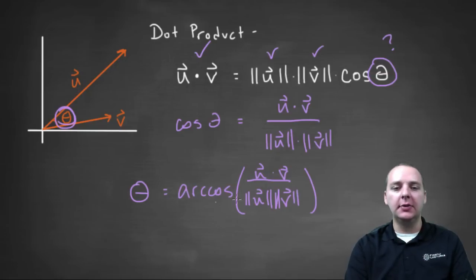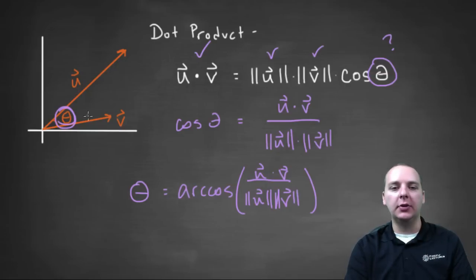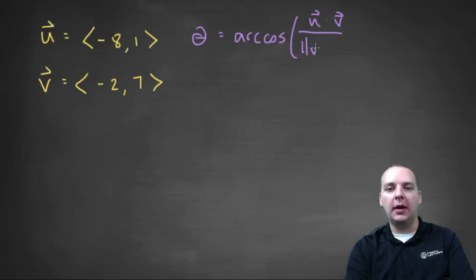And so this gives us a really nice way of computing the angle between two vectors. So let's practice it one time, let's see how this actually plays out. So here we've got two vectors, we've got vector u and vector v, and let's see if we can use this formula. First of all, let me jot it down again. It was theta equals arc cosine of u dot v divided by magnitude of u times the magnitude of v of course. Alright, so let's find these things here.